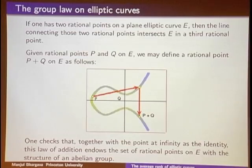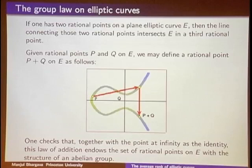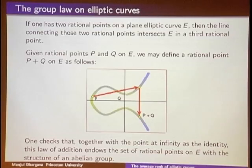The set of rational points on an elliptic curve forms an abelian group under this law: draw the line through two points, take the third point of intersection, reflect across the x-axis. A rational point means a point with rational coordinates. If P and Q both have rational coordinates, then P + Q does as well. This group is not necessarily finite — that's what makes it interesting.